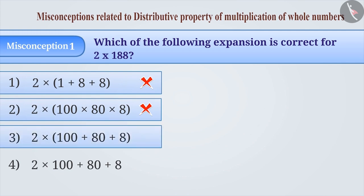With the correct understanding, option 3 is chosen, which is the correct answer. Sometimes, the usage of brackets is considered unnecessary and they are ignored, and the given numbers are expressed as in option 4. This is also an incorrect answer.